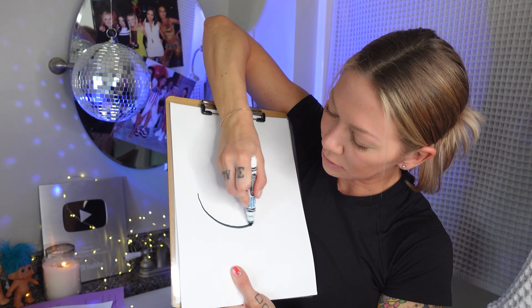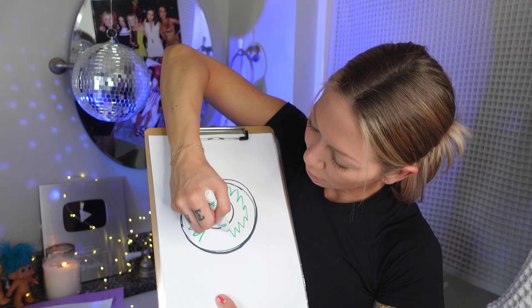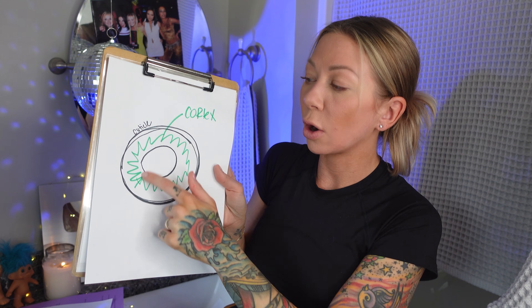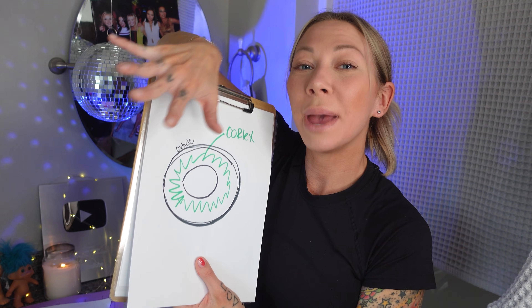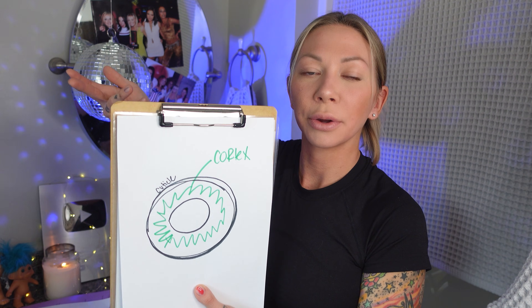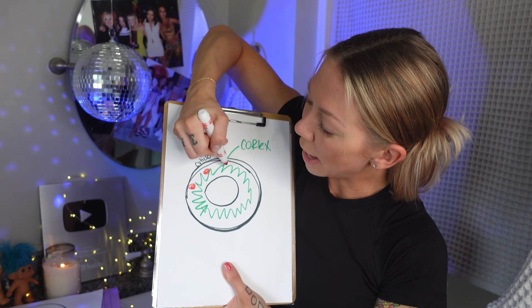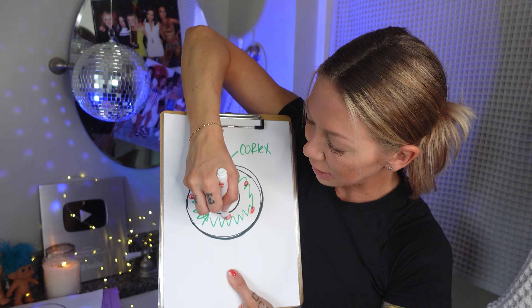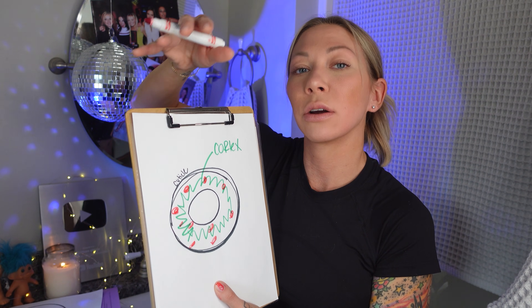Here's our diagram again. This is the cuticle — the thin outer layer. This is the cortex, the second layer. This is giving hair up to 80% of its strength. In this layer, you're going to find melanin, which determines our hair color. Our hair color is like our skin color — it's genetic. So in here, you're going to find melanin granules, which you can think of as chocolate chips.